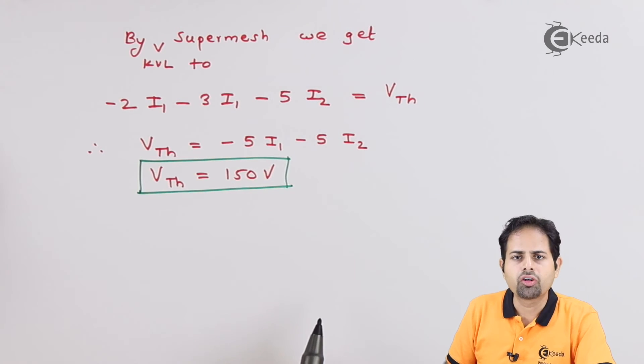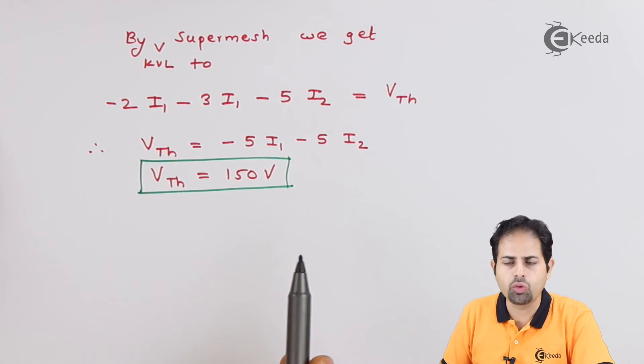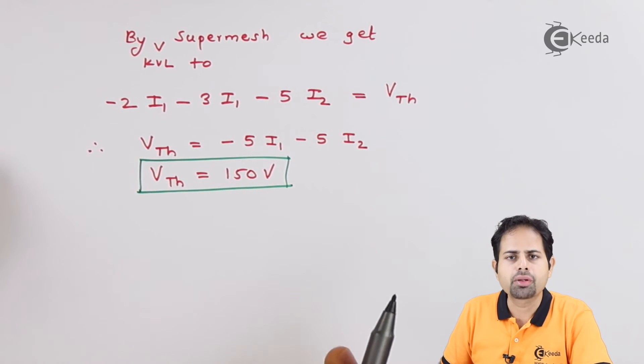Vth. So this is the value of Vth that we get is 150 volts, and hence we are done with step number one.